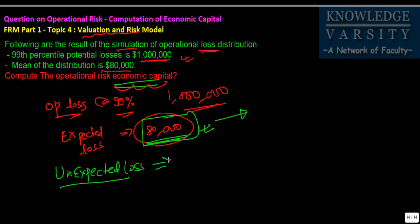Unexpected loss over here will be whatever at 99 percent you have computed, that is 1 million dollars, minus the expected loss. That's the economic capital that you will generate.